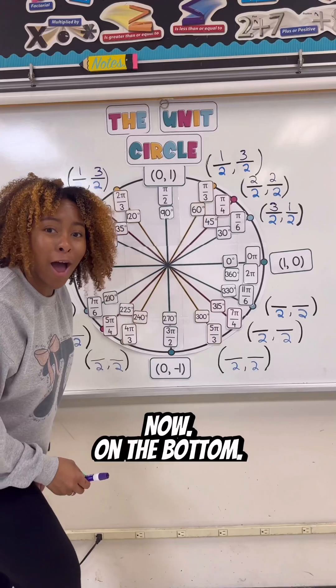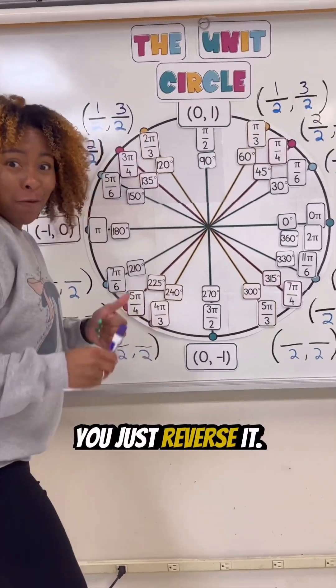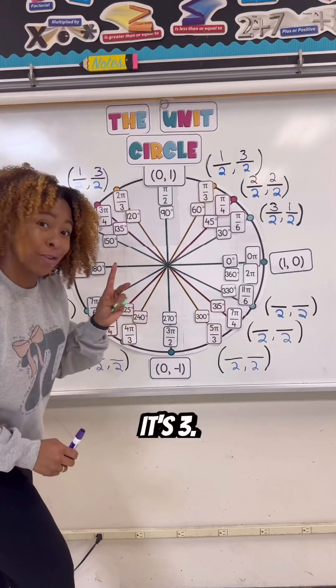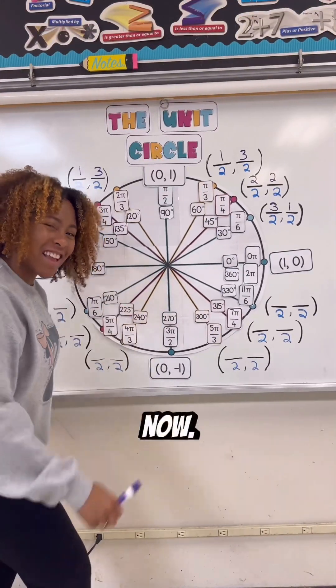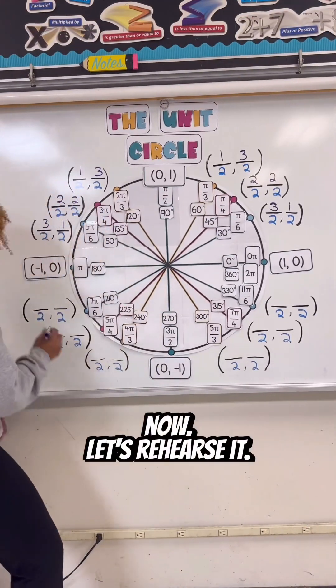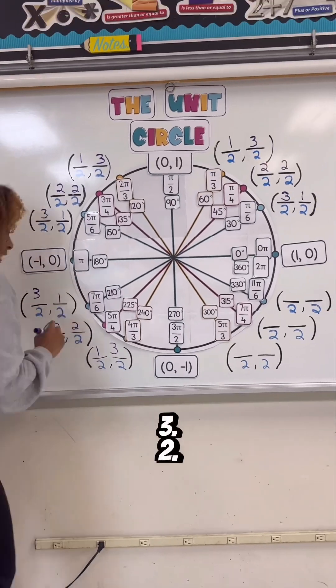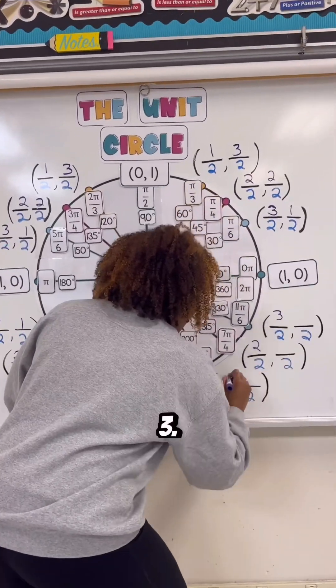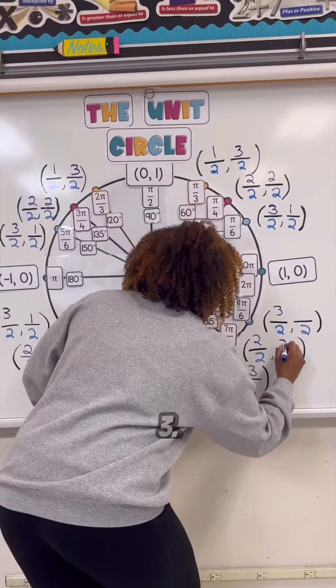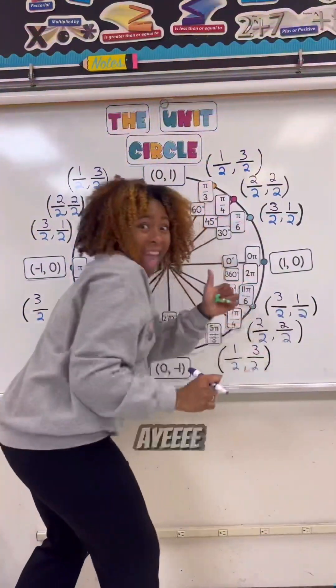Now on the bottom you just reverse it. It's 3, 2, 1. Now let's rehearse it: 3, 2, 1. 3, 2, 1. 3, 2, 1. Ayyy!